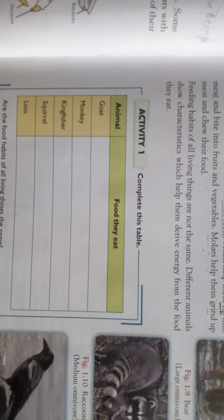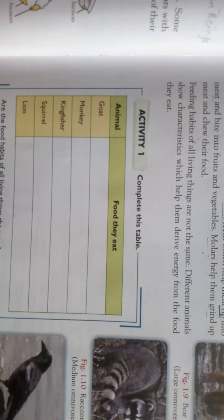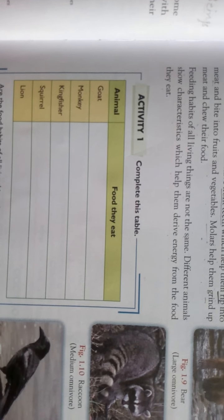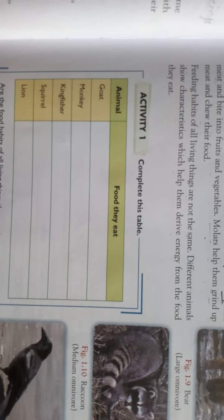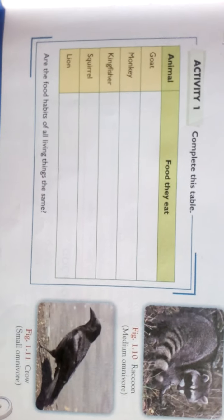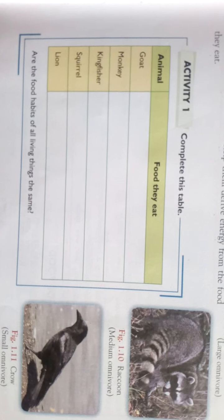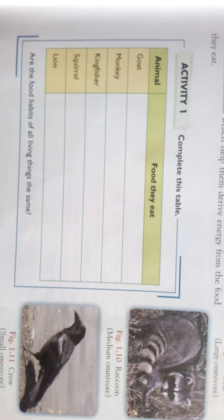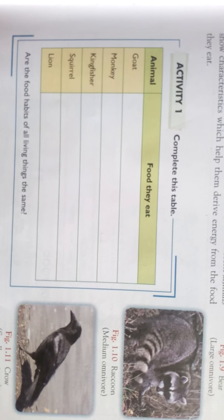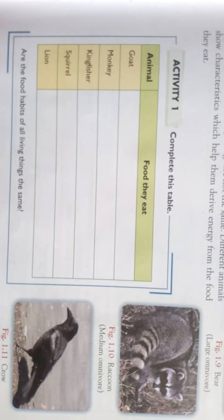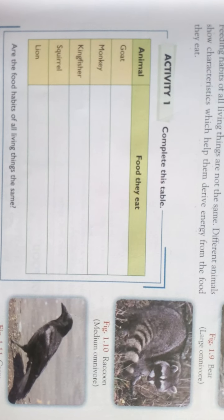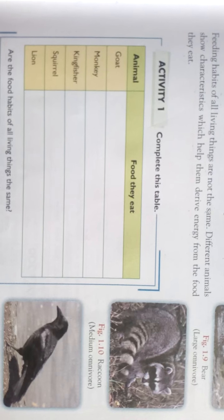The feeding habits of all living things are not the same. Herbivores eat plants, carnivores eat meat, and omnivores eat both plants and animals. Different animals show characteristics which help them derive energy from the food they eat. Now you have to complete this activity — animal names are given and you have to write the name of the food they eat. The last question is: are the food habits of all living things the same? Write the answer based on what you have learnt.